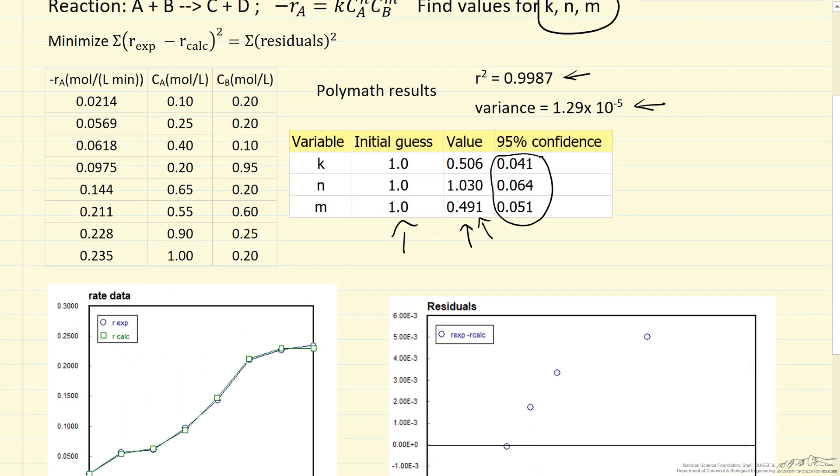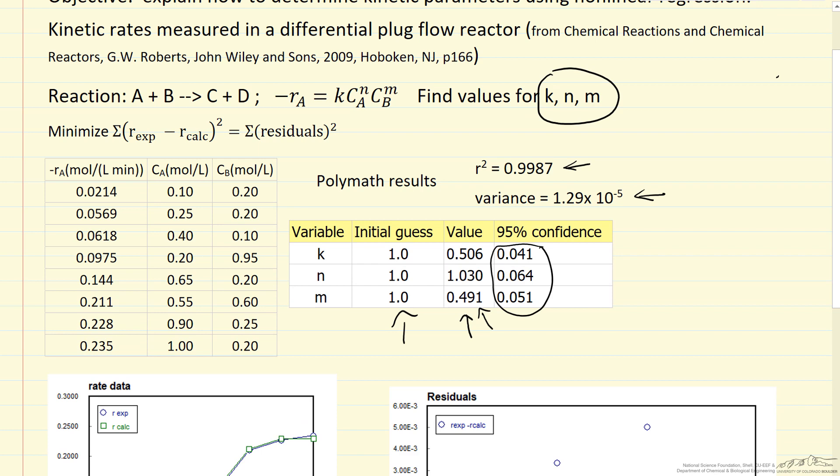And so what we've done is fit the kinetic data to a model where the rate is 0.506 (with appropriate units) times concentration of A to approximately the first power times concentration of B to approximately 0.5 power. This is what nonlinear regression very quickly does in polymath. We can then use this rate model in designing reactors to carry out this reaction.